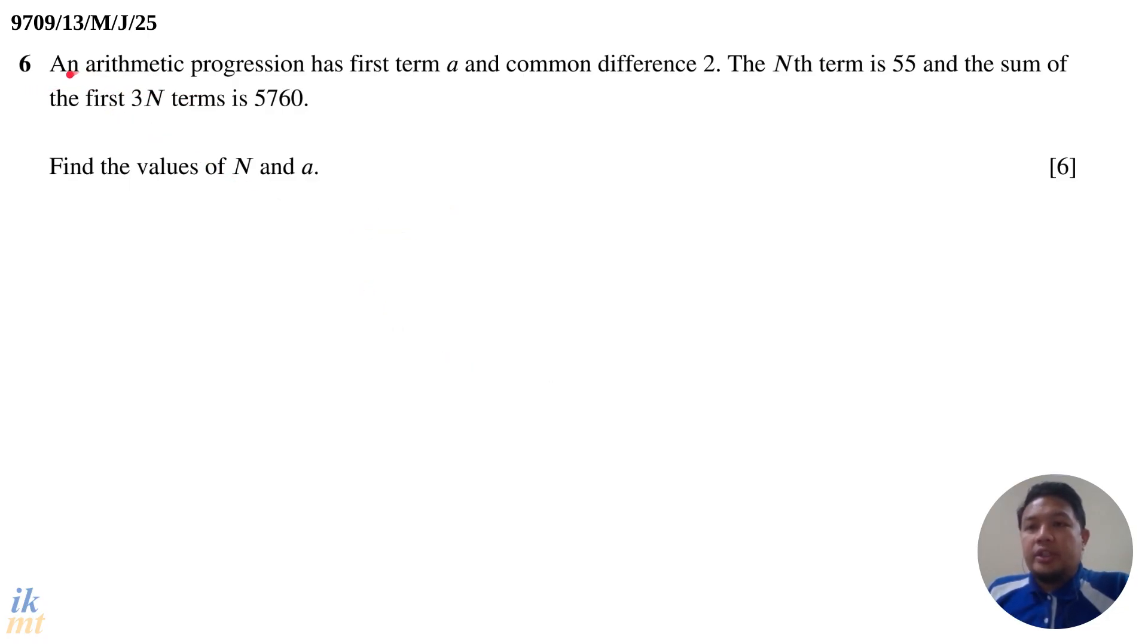Let's read through the question. An arithmetic progression has first term a and common difference 2. The Nth term is 55 and the sum of the first 3N terms is 5760. Find the values of N and a.